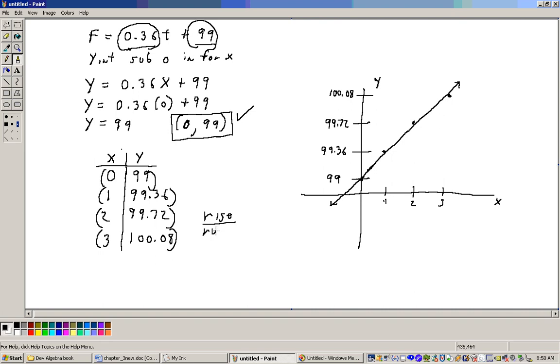So if your number before the X variable is not a fraction, write it as a fraction. So that would be 0.36 over 1. So that means when you run 1 along the X-axis, you're going to rise 0.36 on the Y-axis.